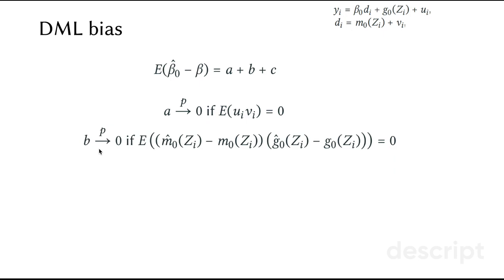The second term disappears if the systematic part of the prediction error, so basically how we approximate the true data generating process for d, and how well we approximate our data generating process for y. If these errors in approximations are uncorrelated, then the second term will also disappear.